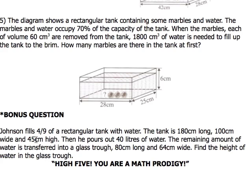This question will put together everything we've learned in the last five questions and put it into one big question. So let's take a look at the question right now. It says here that Johnson fills 4/9 of a rectangular tank with water. What does that mean? 4/9 - we divide the thing into 9 parts, we multiply by 4. The tank is 180 cm long, 100 cm wide, and 45 cm high. Now what do I do first of all? Straight away I find out how much water is in the tank.